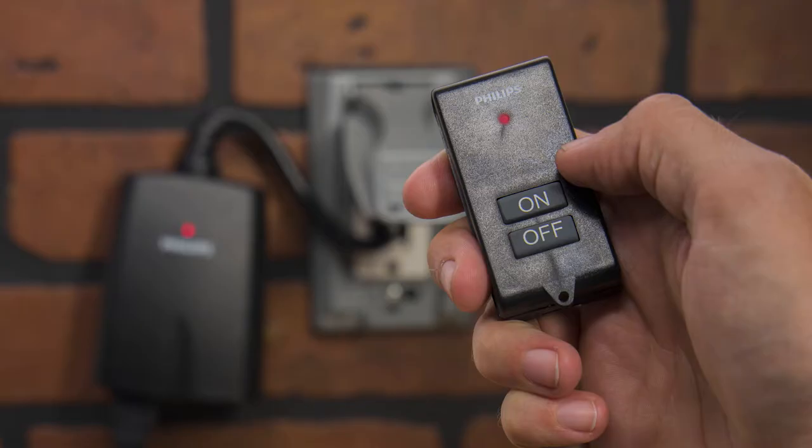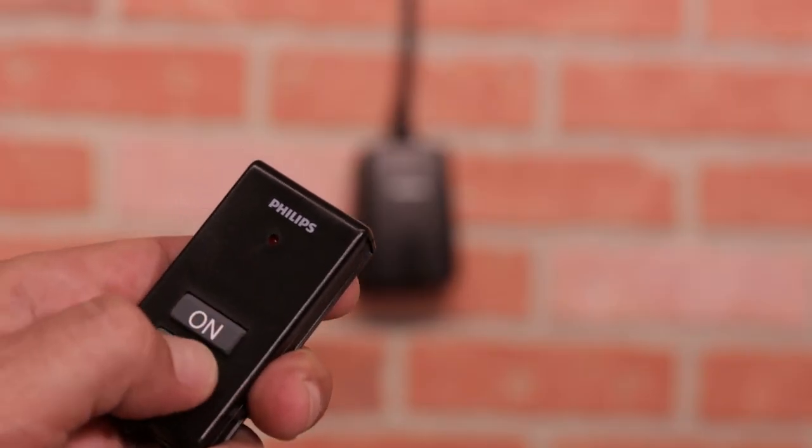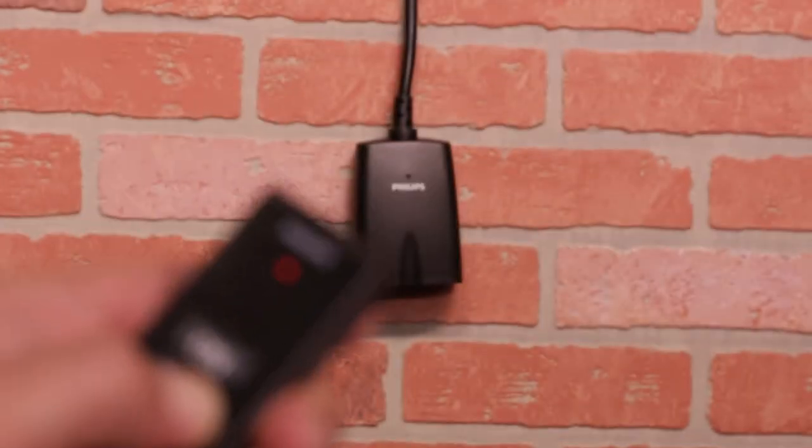The lighting control has a line of sight range of up to 80 feet. If the indicator on the remote doesn't activate when either button is pressed, a few simple steps may resolve the issue.